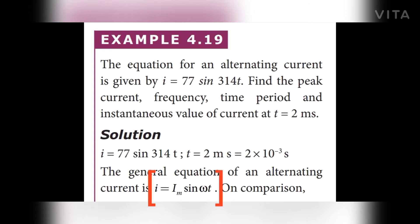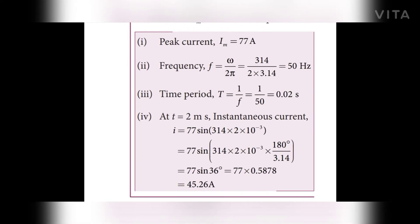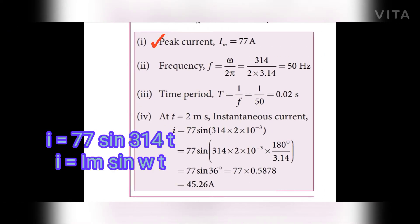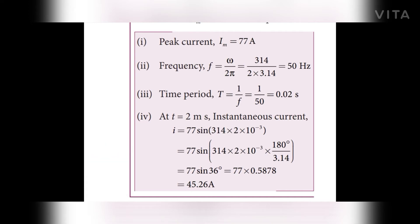We compare the given equation with the general equation i = Im sin(ωt). The peak current Im = 77 A. The angular frequency ω = 314 rad/s, so frequency f = ω / (2π) = 314 / (2 × 3.14) = 50 Hz. The time period T = 1/f = 1/50 = 0.02 seconds.